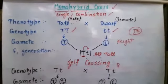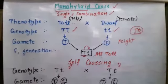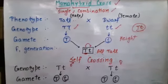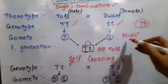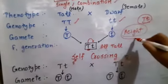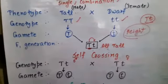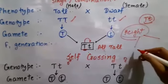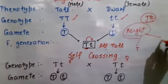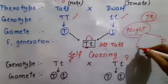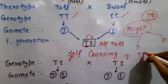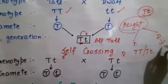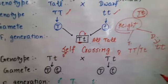As you all know, Mendel studied seven characters of the pea plant. Out of those seven characters, we have chosen only one — that is height. Height is a character and two different forms of height exist: tall and dwarf. Tall can be TT or Tt, and dwarf will be tt.